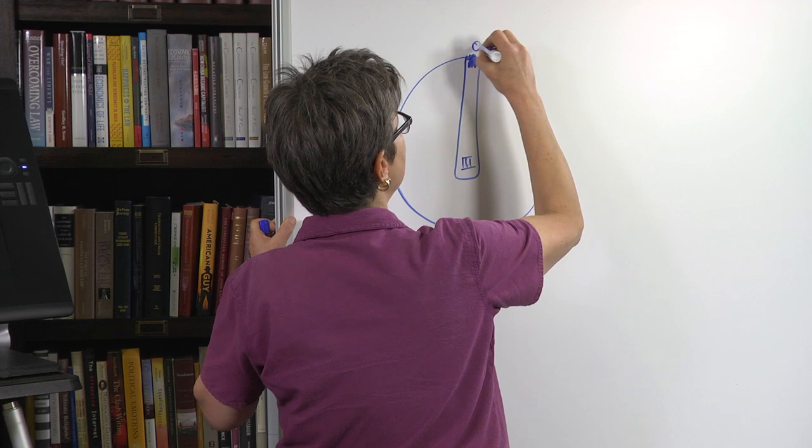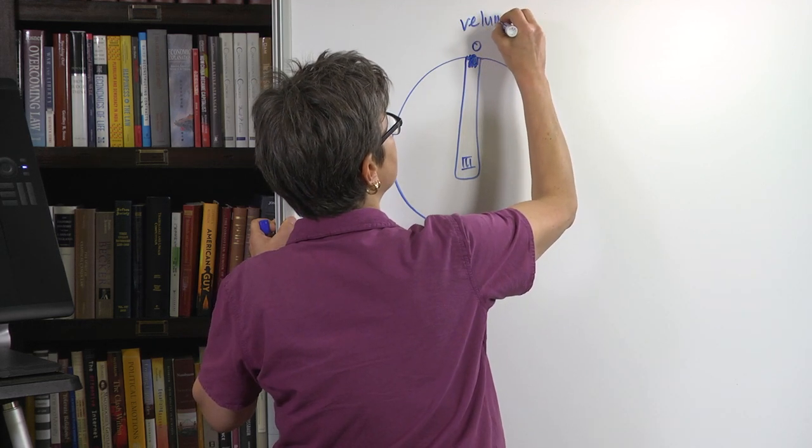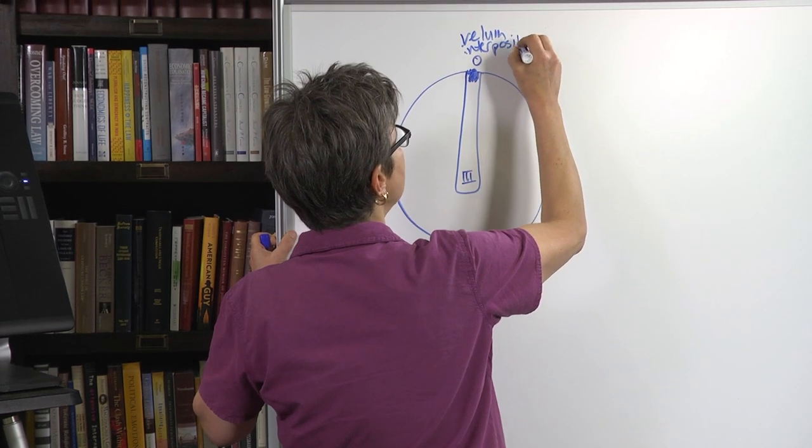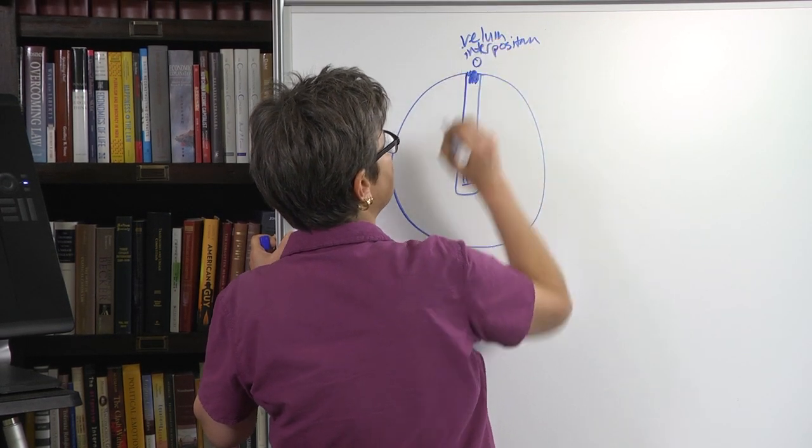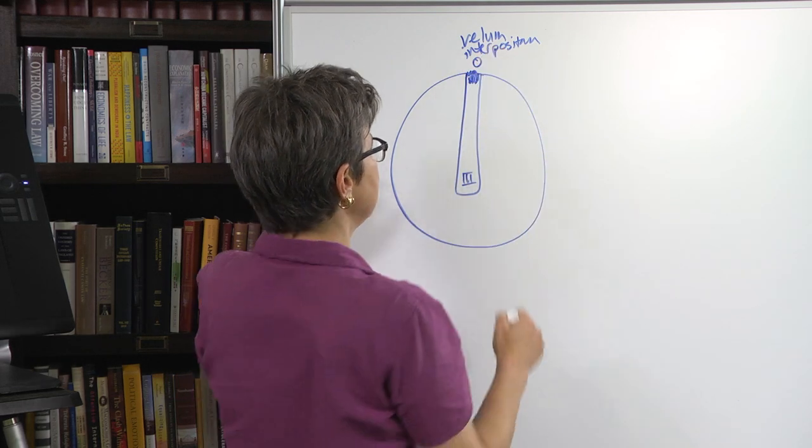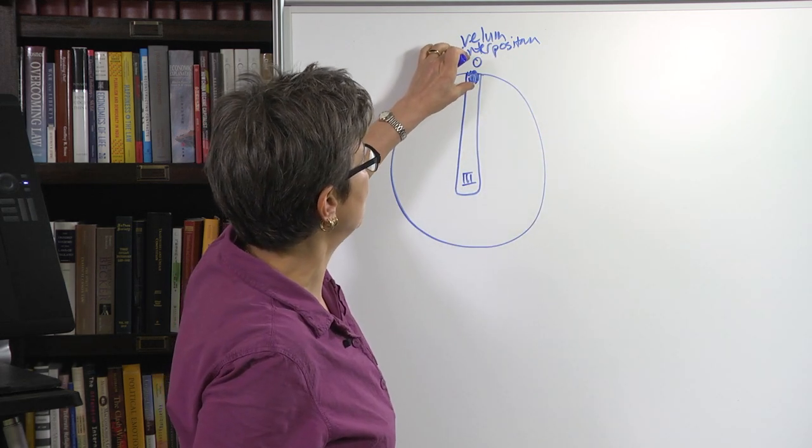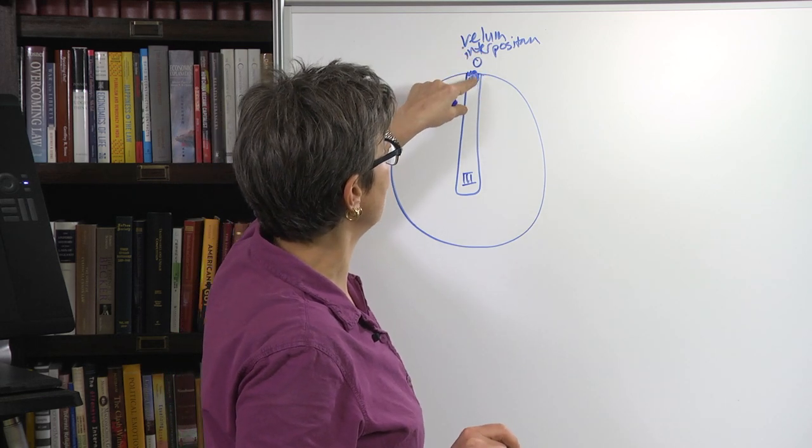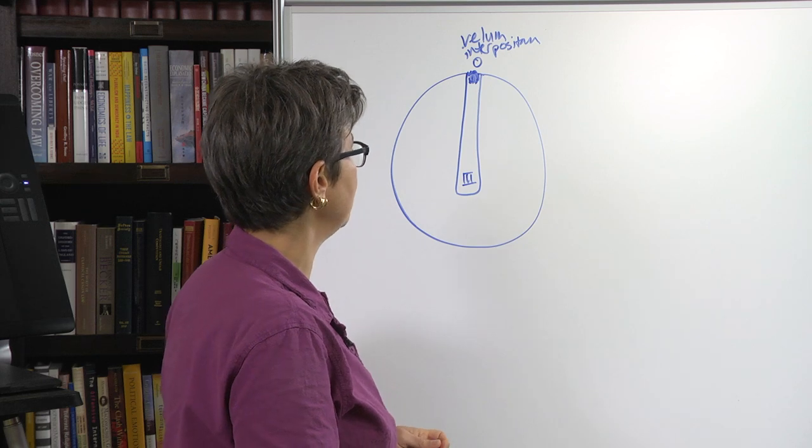And it's right here at this roof that you get choroid plexus. Because up here is the vellum interpositum. This is outside the brain. This is, we have plenty of access to capillaries here. And then this is inside. And so it's this marriage, it's this border between the periphery and the central that is the place where you're going to see a choroid plexus.